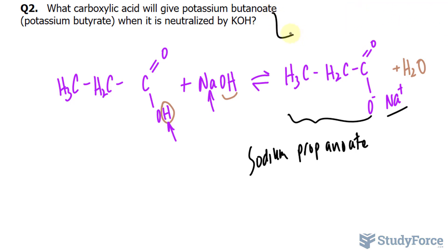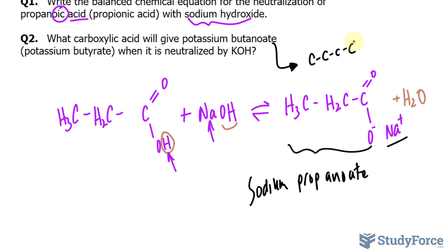So let's begin by drawing out the molecular structure of butanoate. But represents four carbons, so we should have four carbons, and the last carbon will be our carboxyl group, OH.